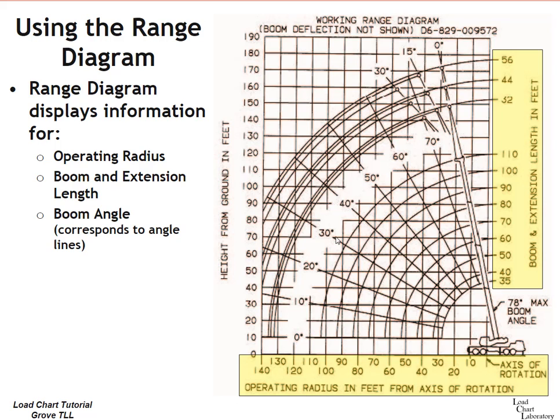Boom angles. We've got the boom angles highlighted in red from 0 degrees up to 70 degrees and the lines, the diagonal lines, are the indicators for the different boom angles.